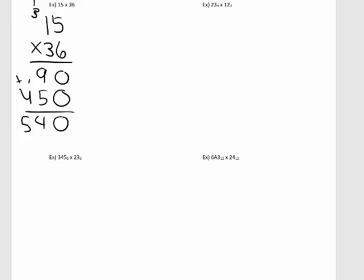Now let's multiply numbers in different bases. Let's start with 23 base 4 times 12 base 4. First, I'm going to write it vertically. So 3 times 2, that is 6. How many groups of 4 can I take from 6? That's 1 with a remainder of 2 — so I'll write the remainder, which is 2, and carry.